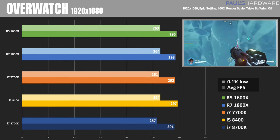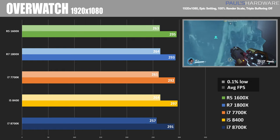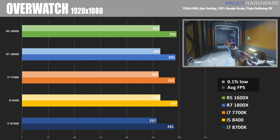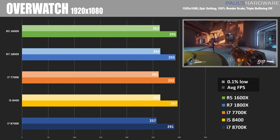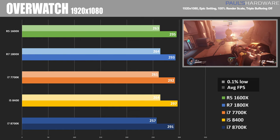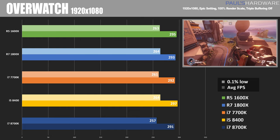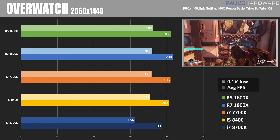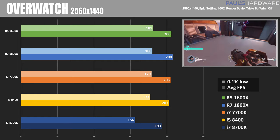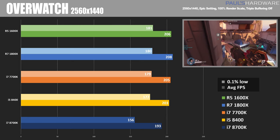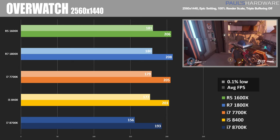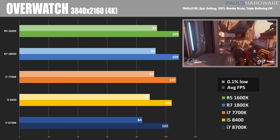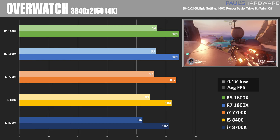Overwatch is a very popular shooter from Blizzard, and at 1080p it's capped at 300 FPS max, which is what we're seeing across every setup — about 290 to 300 FPS hitting the cap. At 1440p we start to see a break from that, and interestingly the Ryzen CPUs are doing marginally better than the Coffee Lake CPUs, which I thought was noteworthy. That trend continued at 4K as well, with the 1800X and 1600X putting out about 109 FPS, whereas the Coffee Lake CPUs were more down in the low 100s.